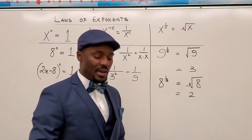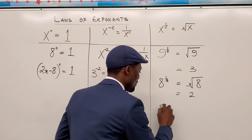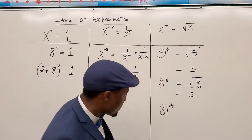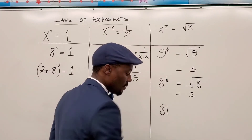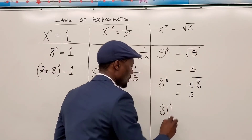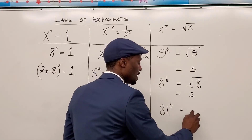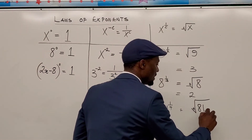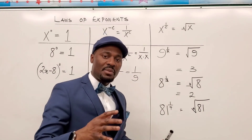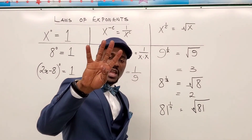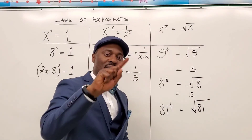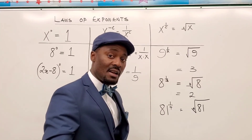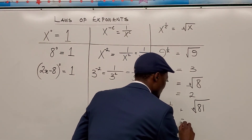For example, eighty-one raised to the power of one over four. You're going to get the fourth root of eighty-one — which is the number you will multiply by itself four times and your answer will be eighty-one. That number is three, because three times three is nine, times three is twenty-seven, times three again is eighty-one. So that's your answer.